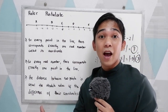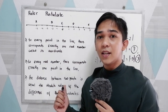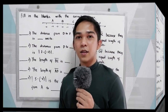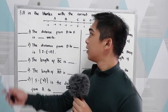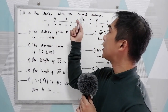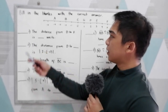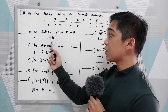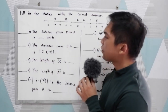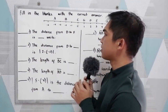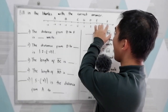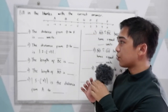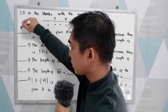After discussing this, let's have some exercises regarding line segments and their measures. Fill in the blanks with the correct answers. Number 1: The distance from D to F is blank units. Locate points D and F — counting from D to F gives 1, 2, 3. So there are 3 units. Write your answer there.